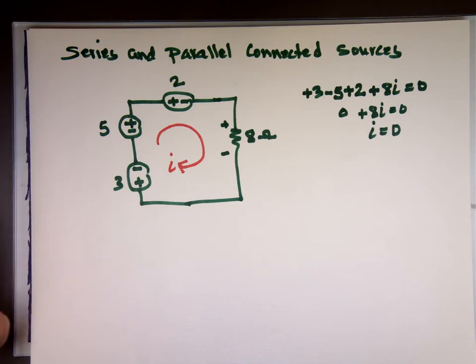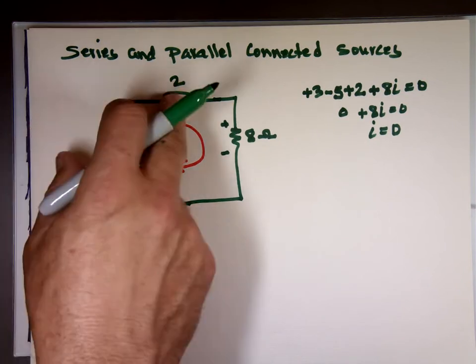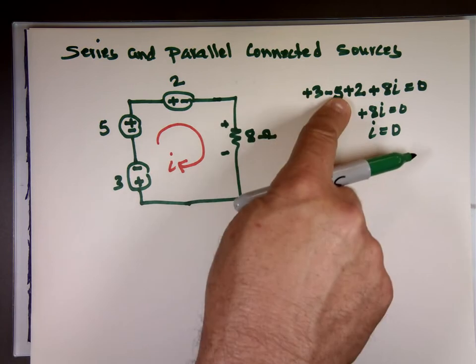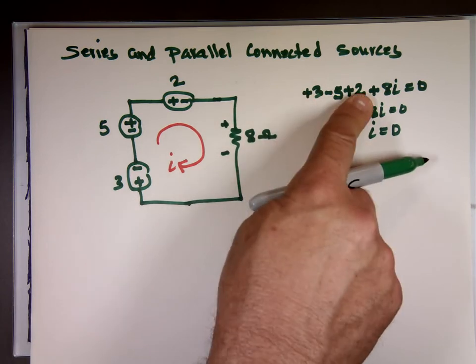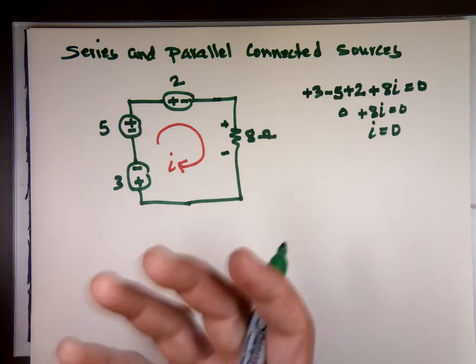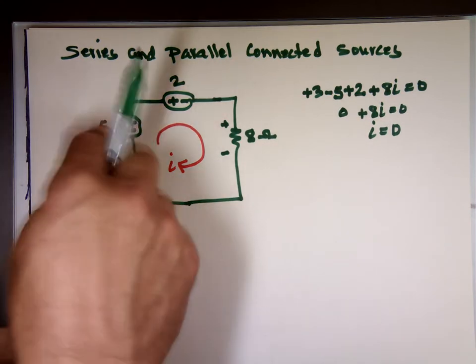But now if these numbers were different, 13, 15, and 12, you're not going to end up with a zero here. What's 13 minus 15? Negative two plus 12, that would be plus 10. That means I can replace that with one source of value plus 10 if this was 13, 15, and 12.